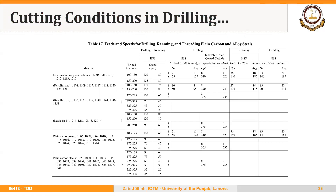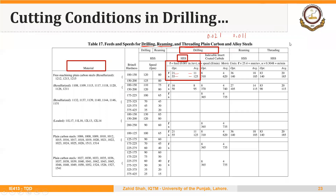We can find tables, as we saw in the case of turning, to know the recommended feed and speed for a certain cutter-workpiece material combination. This table is taken from Machinery's Handbook 30th edition for feed and speeds for drilling, reaming, and threading — plain carbon and alloy steels. The first column lists the material, followed by recommended feed and speed using a high speed steel drill bit. For example, the optimum feed is 0.021 inches per revolution, the average is 0.011, and the optimum speed is 55 feet per minute while the average is 125 feet per minute.